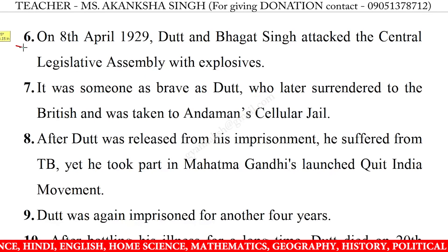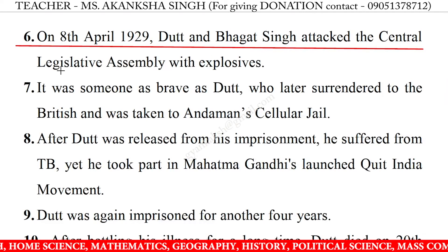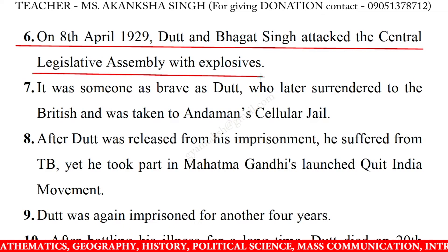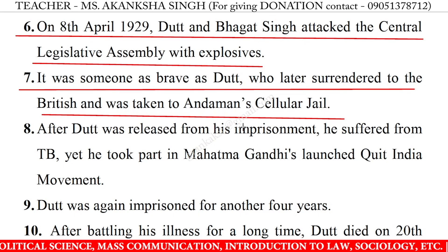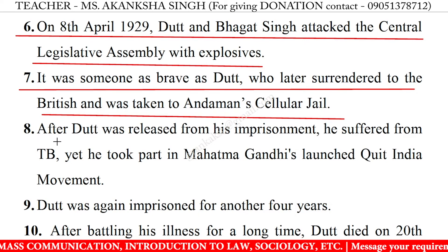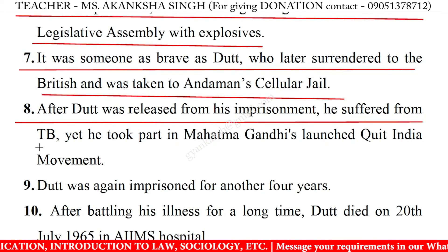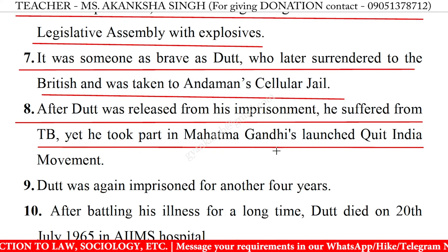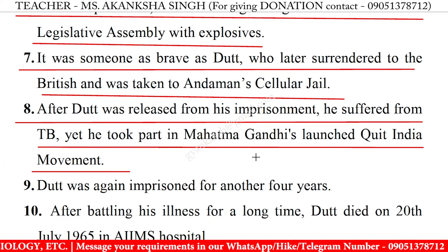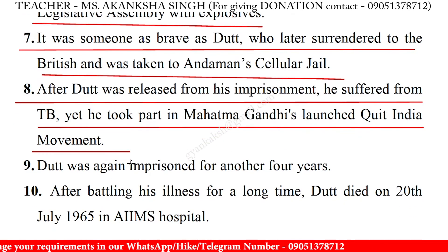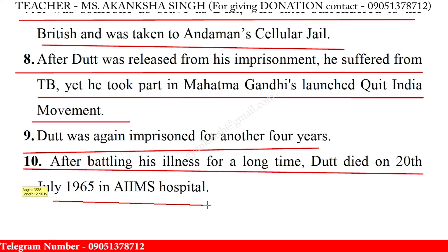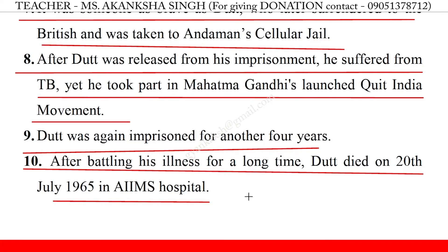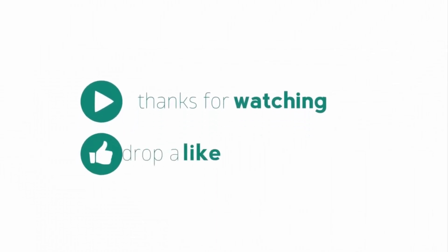6. On 8 April 1929, Dutt and Bhagat Singh attacked the Central Legislative Assembly with explosives. 7. Dutt later surrendered to the British and was taken to Andaman's cellular jail. 8. After Dutt was released from imprisonment, he suffered from TB, yet he took part in Mahatma Gandhi's Quit India movement. 9. Dutt was again imprisoned for another 4 years. 10. After battling his illness for a long time, Dutt died on 20th July 1965 in AIIMS Hospital.